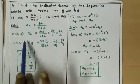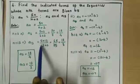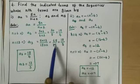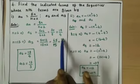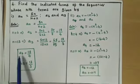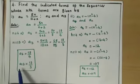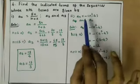Now for n = 13, a13 = 5 into 13 divided by 13 plus 2, which gives 65 by 15, simplifying to 13 by 3. So a6 = 15/4 and a13 = 13/3.